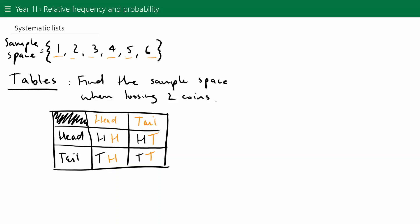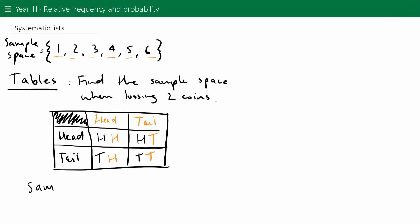There are six elements in our sample space. So the sample space for tossing two coins, in curly brackets, is: HH, HT, TH, or TT. This makes sense — both might be heads, one head and one tail, one tail and one head, or both tails. That's one way of using a table.